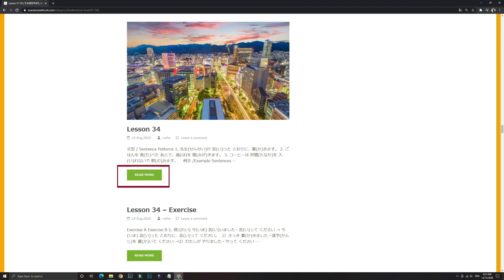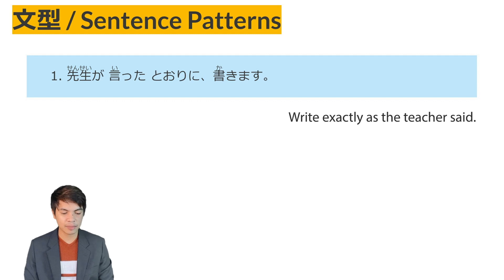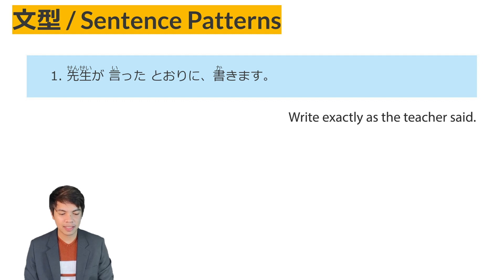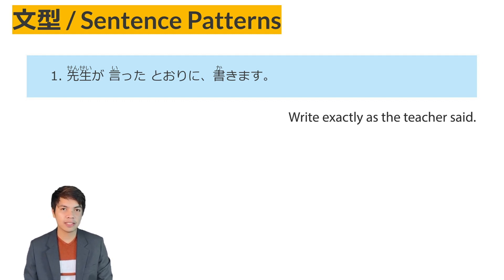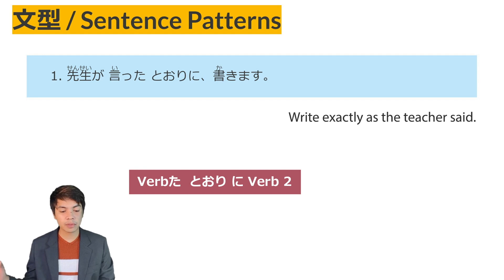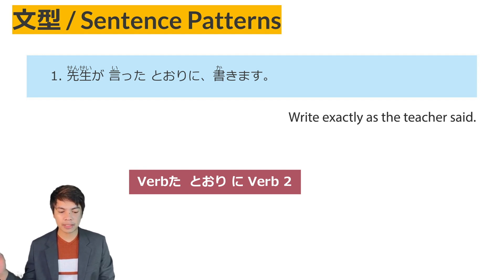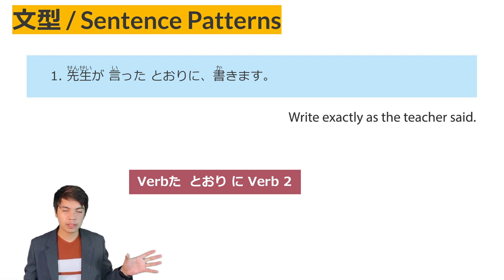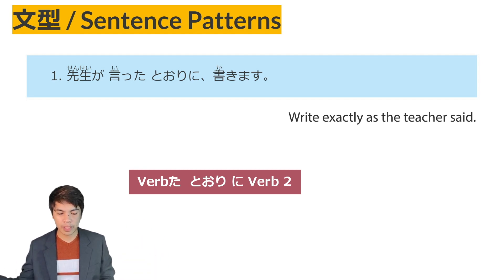Lesson 34, Sentence Patterns. Let's read Sentence Pattern No. 1: Sensei ga itta tori ni kakimasu. The pattern used in this sentence is verb ta-form tori ni and verb 2. The verb ta-form tori ni means 'just like' or 'the same way as' verb 1. You will do verb 2 the same way as verb 1.